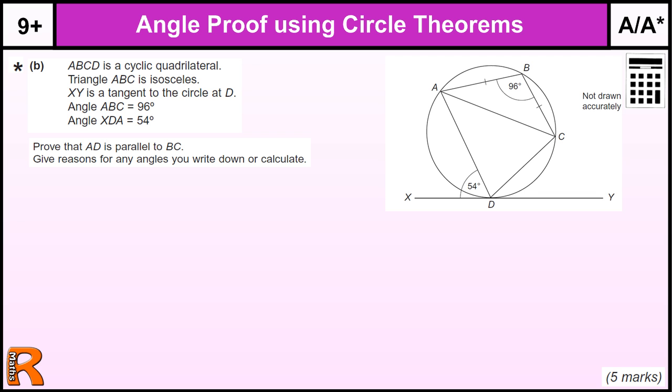Angle proof using circle theorems. This question is an A/A star question. It's using a lot of circle theorems in one question, and it's using probably the trickiest one of all. It's a star question because there's five marks in this question, and there's a mark at the end for getting a reason for your answer that's clear.